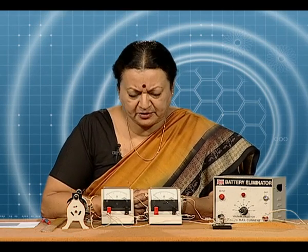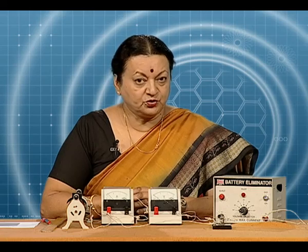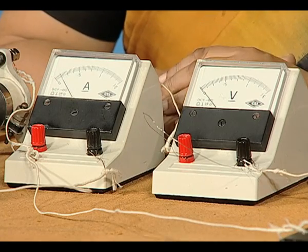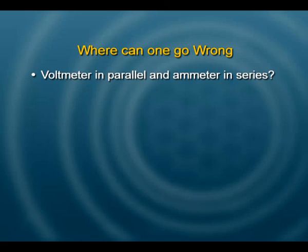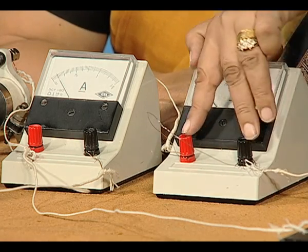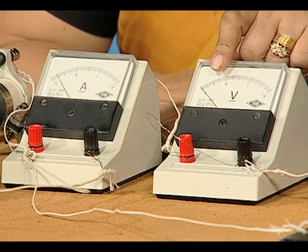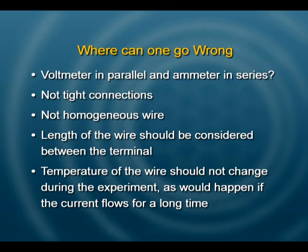Where can we go wrong? A common mistake is connecting the ammeter not in series. The ammeter must always be in series so all the current flows through it, and the voltmeter should always be connected in parallel with the conductor. All your connections should be tight. You should not leave current flowing endlessly in the circuit — switch it off when you are not taking readings. These precautions will help you get good results.